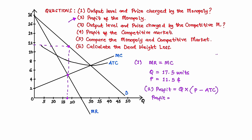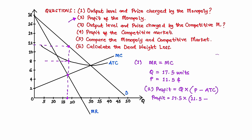We know that the quantity to be produced by the monopoly is 17.5 units. We multiply it with the price of $11.50, minus the average total cost. The average total cost is something we have not determined yet, so we need to go back to the graph and find it. We go from the quantity all the way to the average total cost curve. Going from Q up to the ATC curve, we get the point on the curve, which means the average total cost is approximately $8.